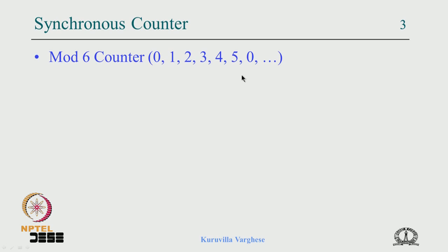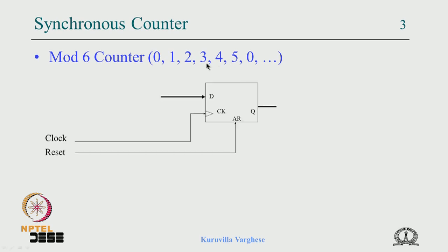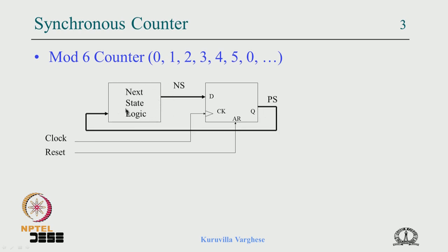For binary encoding we need 3 flip-flops because log base 2 of 6 is 2-point-something, so we take the integral number of flip-flops, which is 3. We show them together since we are building complex systems. All the clocks are tied together; when reset comes this is 0. The idea is to decode the next count from the present count, so we put a combinational circuit before the flip-flops to take the present count and decode the next count.